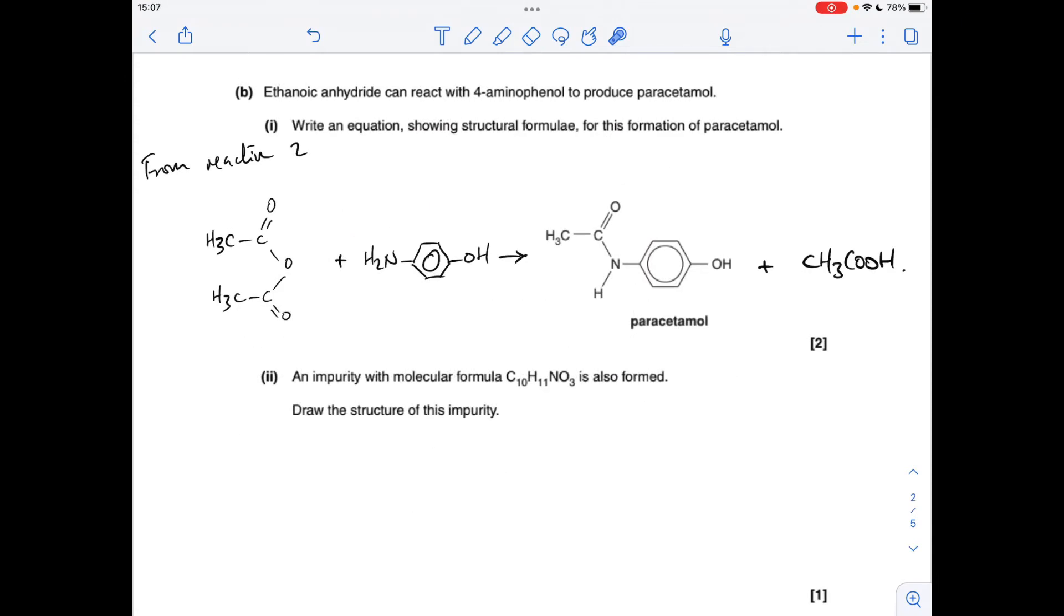Moving on to part B. If you take information from reaction 2, you can see that when ethanoic anhydride reacts with 4-aminophenol, you are going to make paracetamol and ethanoic acid.